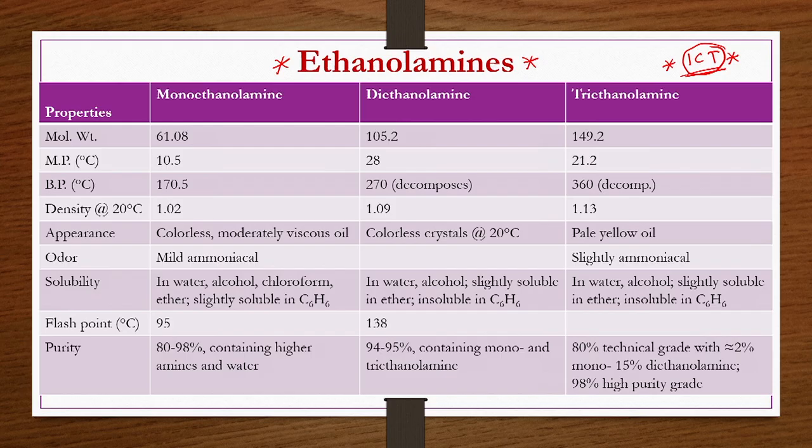Ethanolamines are produced by ammonolysis reaction — reaction of ethylene oxide with ammonia. This is a series reaction, similar to the chloromethane series reaction. Before going into production details, we compare properties of mono, di, and triethanol amine to understand their importance.